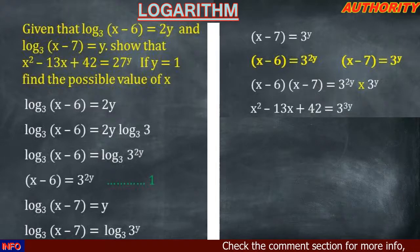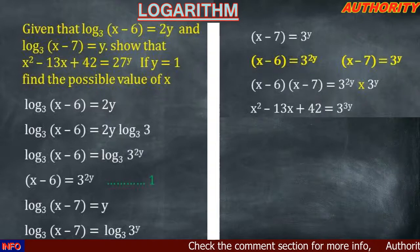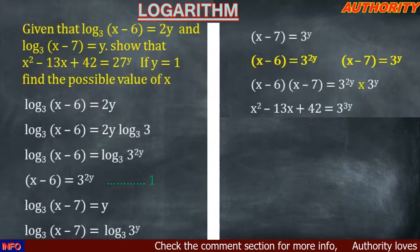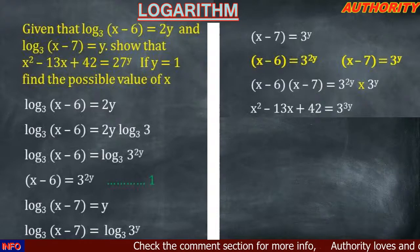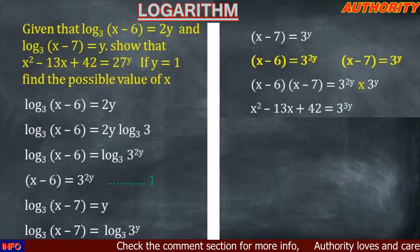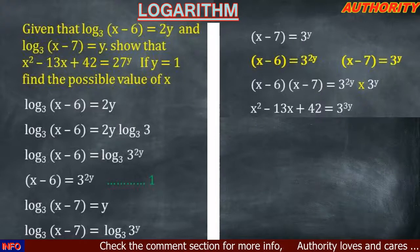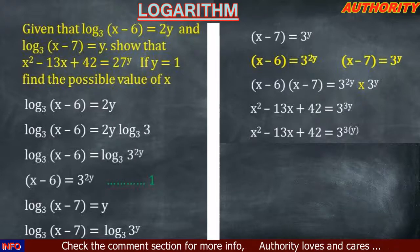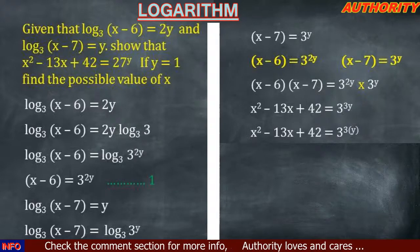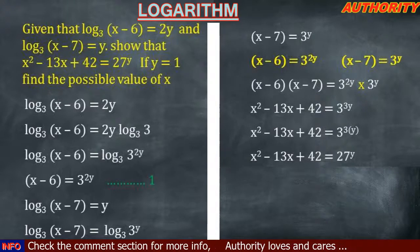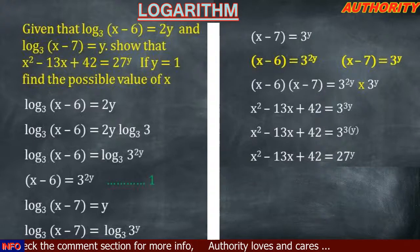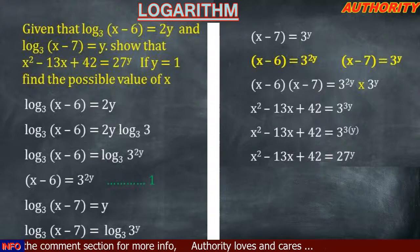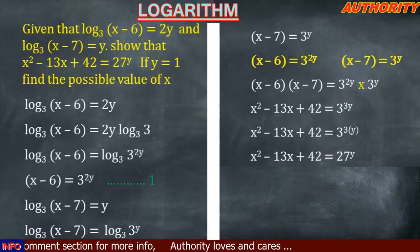Expanding the left-hand side: (x−6)(x−7) gives x squared minus 13x plus 42, which equals 3^(3y). Now 3^(3y) can be written as (3^3)^y. Since 3 cubed equals 27, we have x squared minus 13x plus 42 equals 27 raised to power y — which is exactly what we were asked to show.